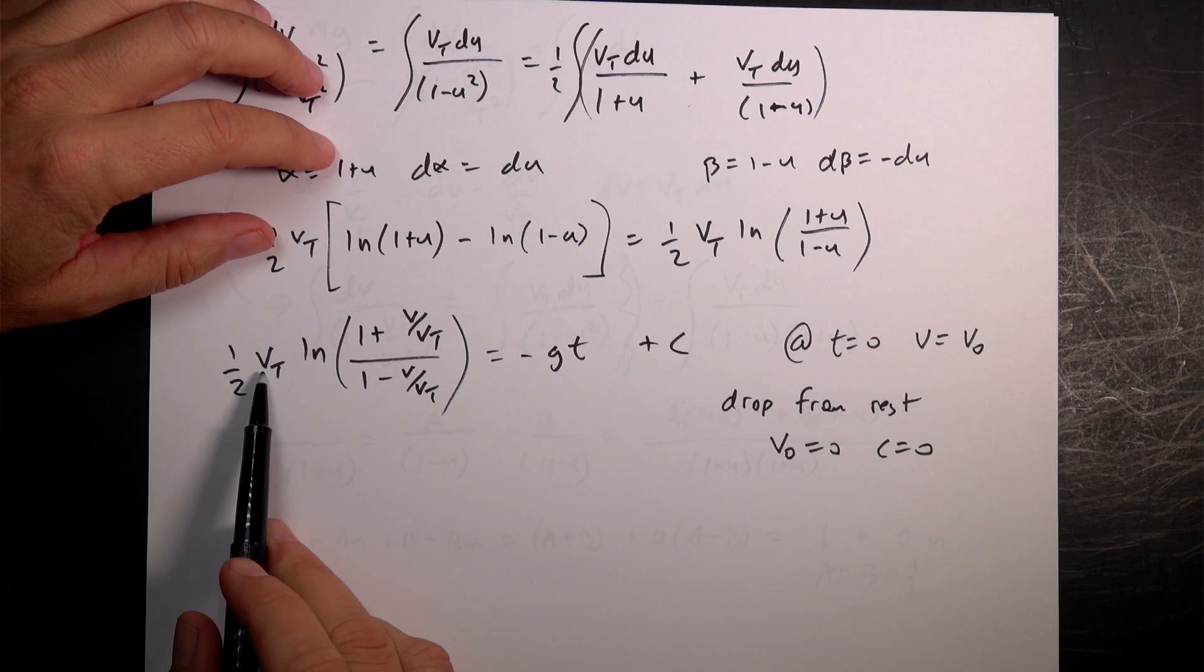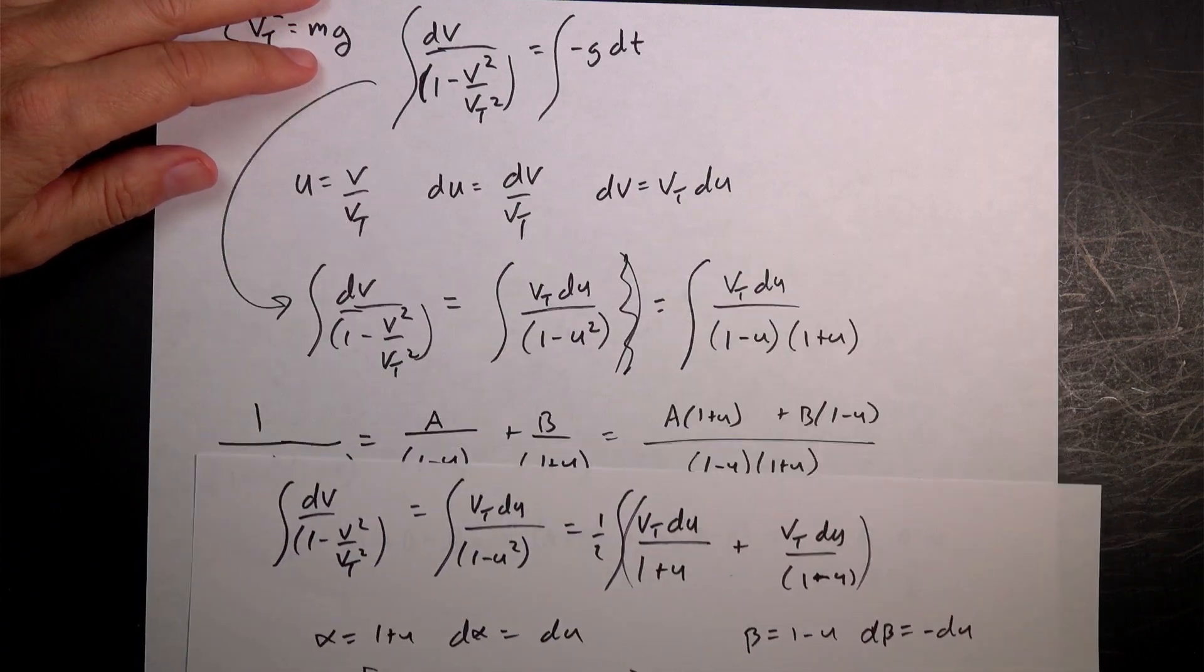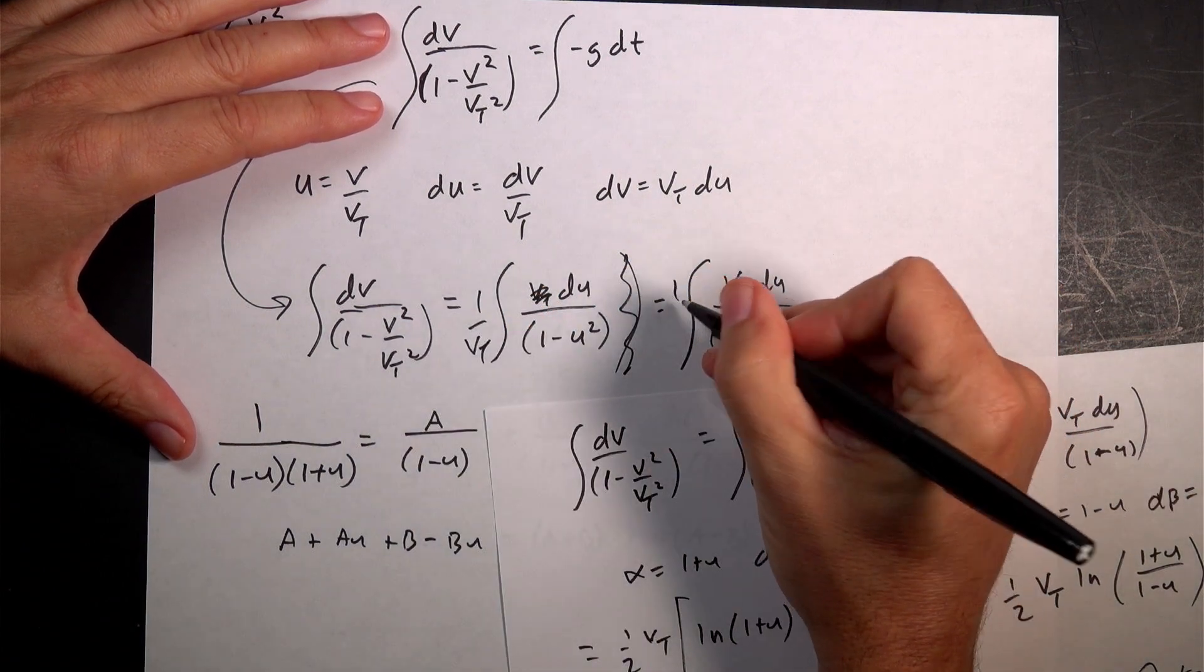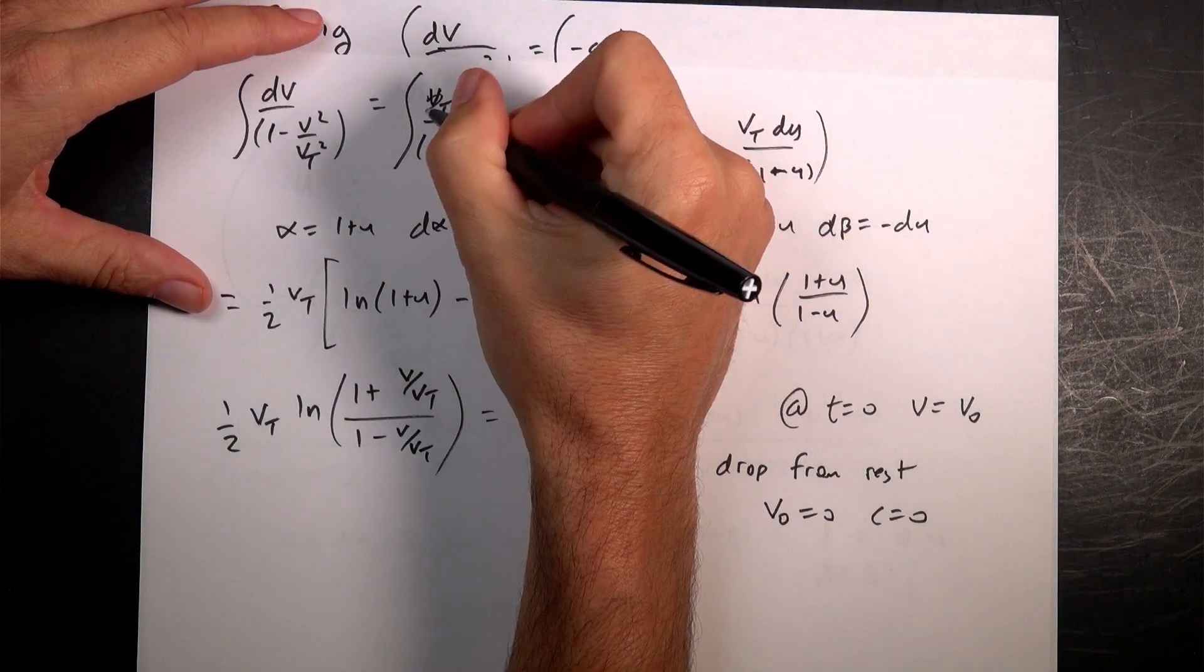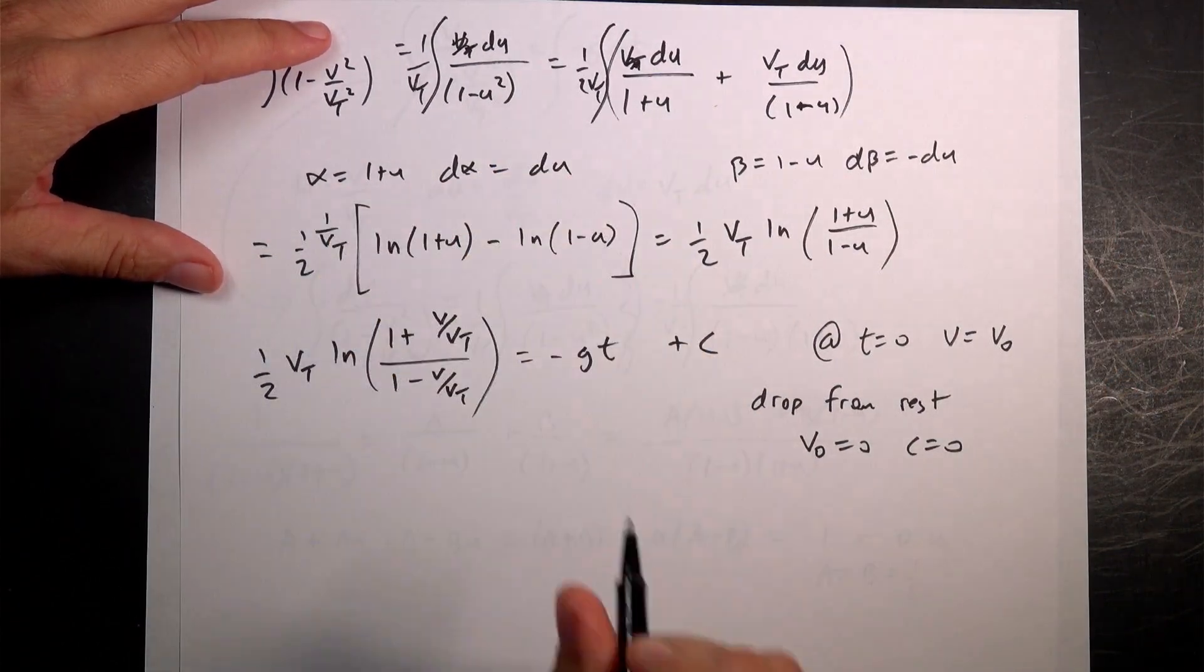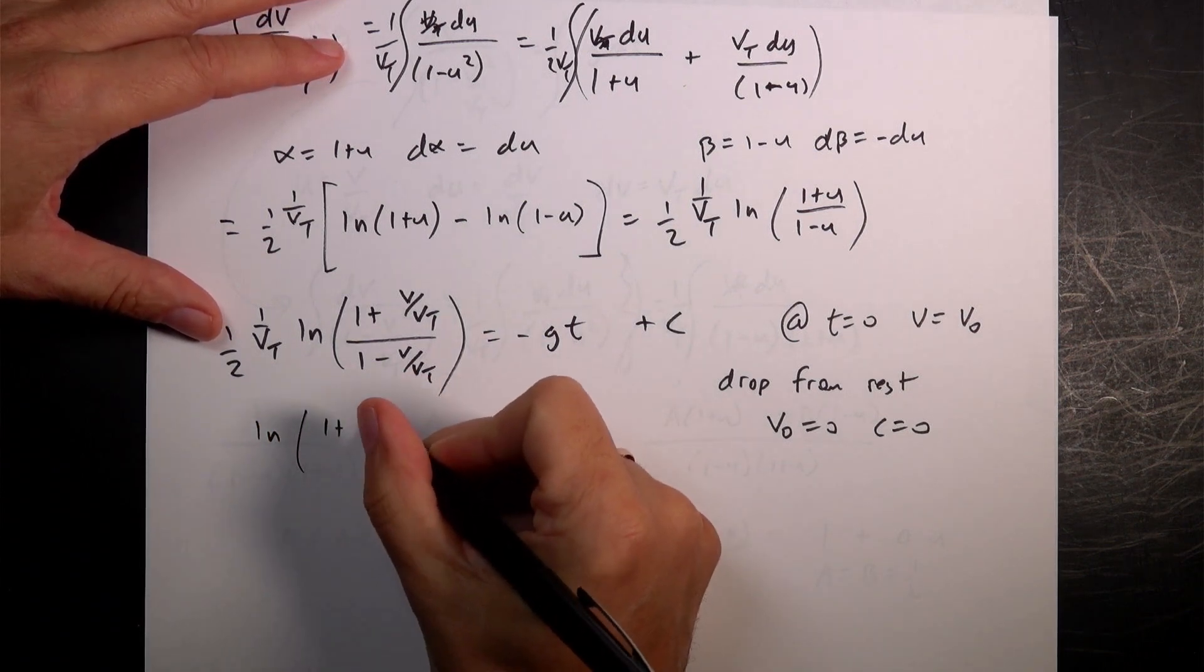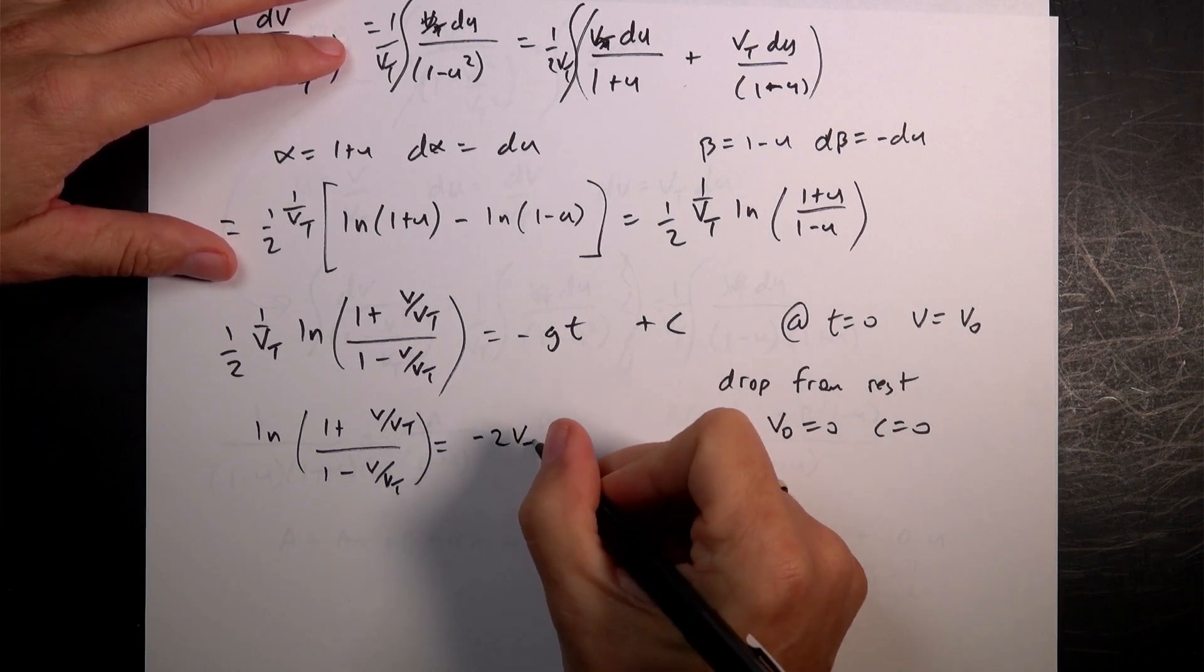So that means that I get this function. I'm going to multiply both by 2 over vt. Is that vt there? Du, dv is, oh, see, I messed up. This is 1 over vt. 1 over vt. I should, I'm sorry about that. So this is going to be 1 over vt. Vt. 1 over. 1 over. I'm a terrible person. Okay. 1 over. So now I multiply by 2 vt. And I get the natural log of 1 plus v over vt over 1 minus v over vt equals negative 2 vt gt.